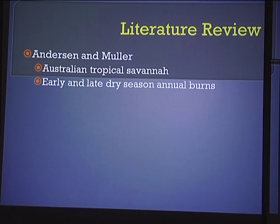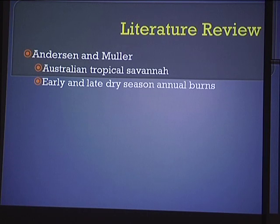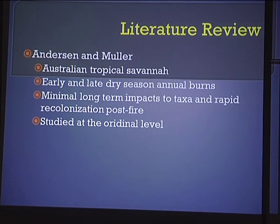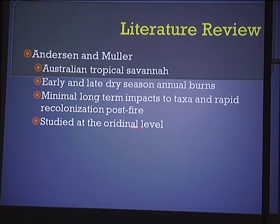I want to go quickly into a couple of studies that really guided what I did. The first is by Anderson and Mueller from 2000. They studied Australian tropical savanna — a very different ecosystem — comparing early and late season annual burns over five years. They saw minimal long-term effects or impacts on the taxa, and they also saw rapid recolonization post-fire — within about two months of burning, they saw all the same taxa as prior to the burn. One thing to note is they studied this at the ordinal level, so there's a chance they were missing some finer details. It's not that their study is bad, just looking at a different scale.